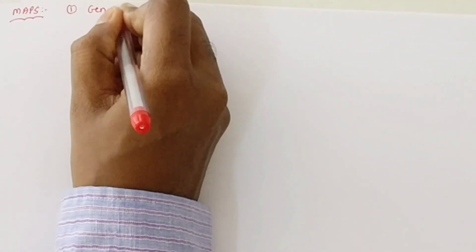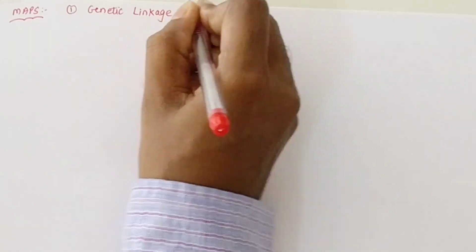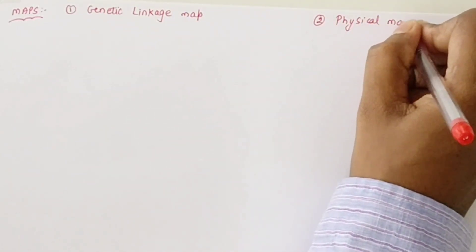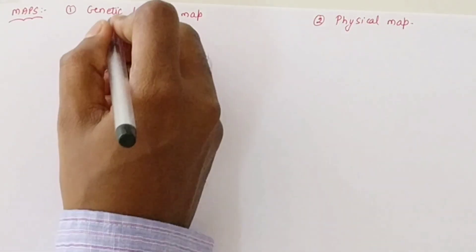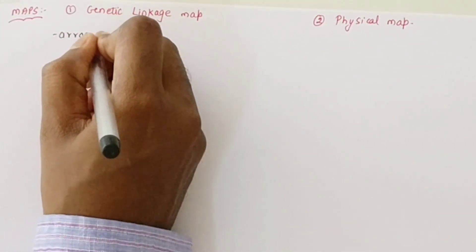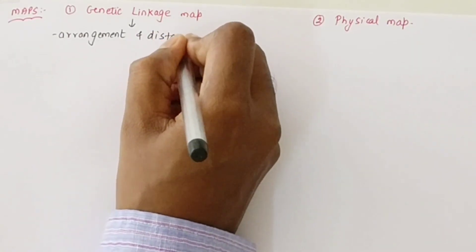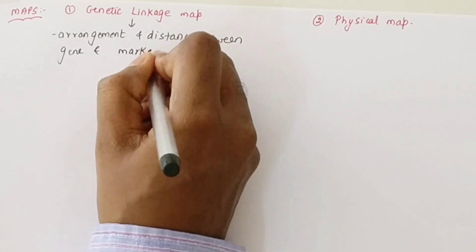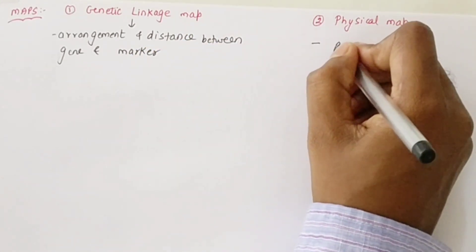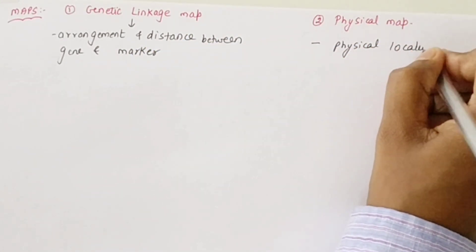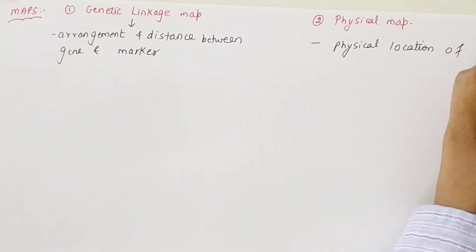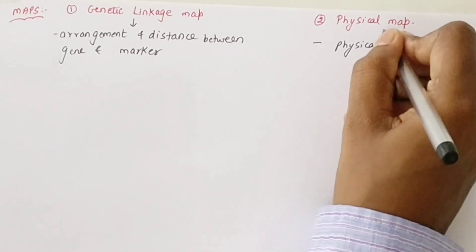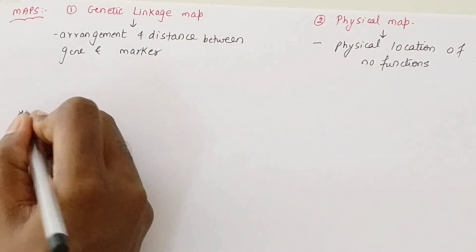Two maps were created by the Human Genome Project. The first is the genetic linkage map, which shows the arrangement and distance between genes and markers — a marker being a fixed point. The second is the physical map, which shows the actual location of the gene on the chromosome.